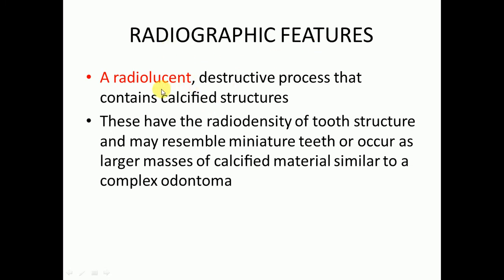Now we'll discuss radiographic features. It will be a radiolucent destructive process that contains calcified structures — the same appearance as in ameloblastic fibro-odontoma. The radiolucent lesion will be present with calcified structures, and those calcified structures will have the radio density of tooth structure. They may resemble miniature teeth or may present as large germ masses of calcified material similar to a complex odontoma.